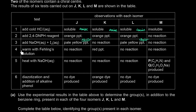The fourth test: warming with Fehling's solution gives a red precipitate with K, and no reaction with the others. We already know K has a carbonyl (an aldehyde or ketone), and Fehling's solution confirms that we specifically have an aldehyde. So K has an aldehyde group — CHO.